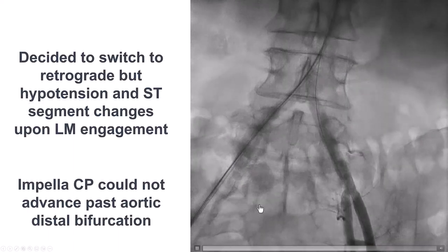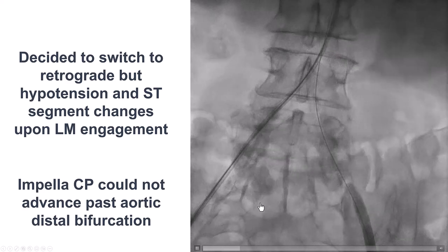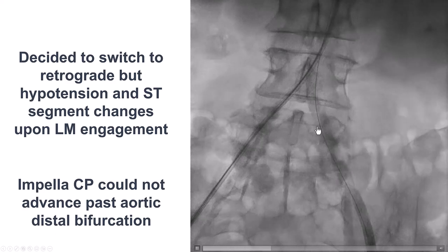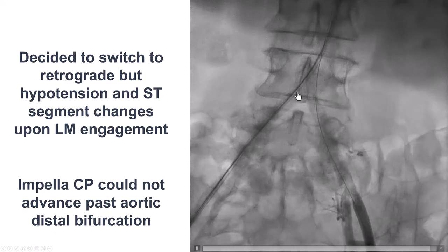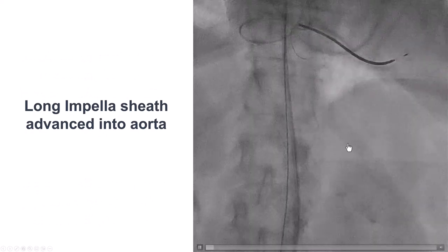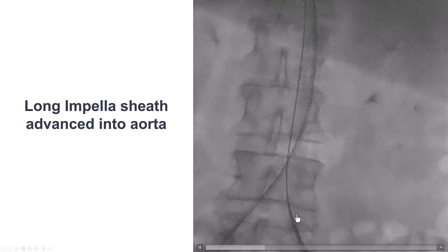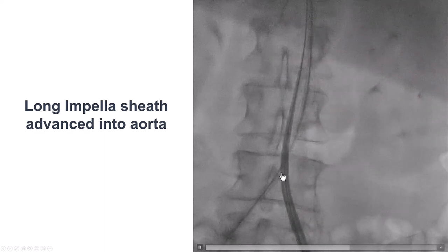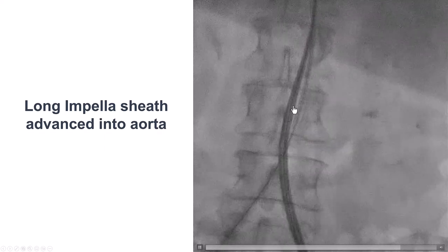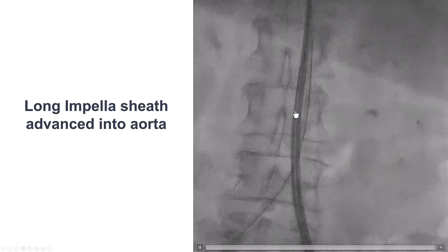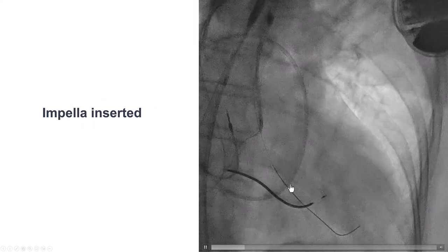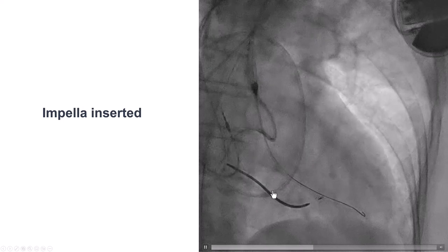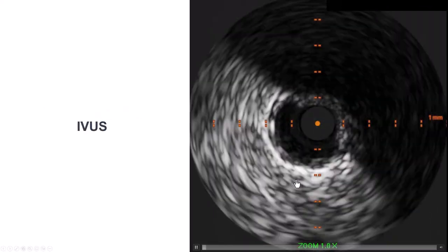At this point, we decided to switch to retrograde, but the patient had hypotension and hemodynamic changes when we engaged the left main. We decided to place an Impella, but could not get it past the aortic bifurcation. We eventually used the longer Impella sheath, which was able to go through the distal calcified left main. After that, we were able to advance the Impella all the way into the left ventricle. Sometimes the short Impella sheath may not be sufficient, but the long Impella sheath can allow delivery into the left ventricle.